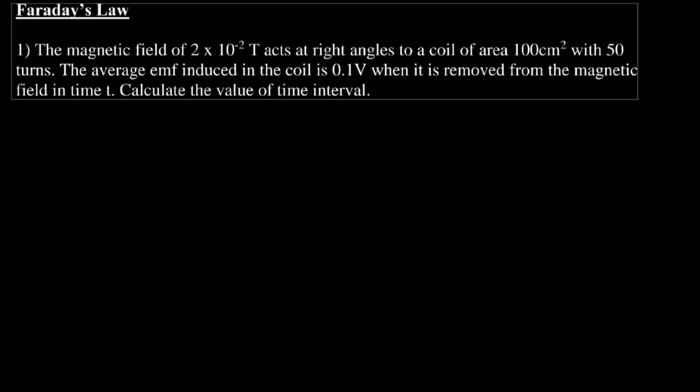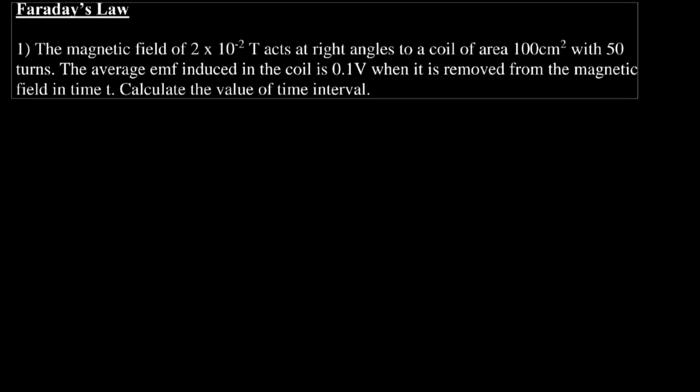In this video, we will deal with problems related to Faraday's law. So let us see question number 1. A magnetic field of 2×10⁻² Tesla acts at right angles to a coil of area 100 cm² with 50 turns. The average EMF induced in the coil is 0.1 volts when it is removed from the magnetic field in time t. Calculate the value of the time interval.